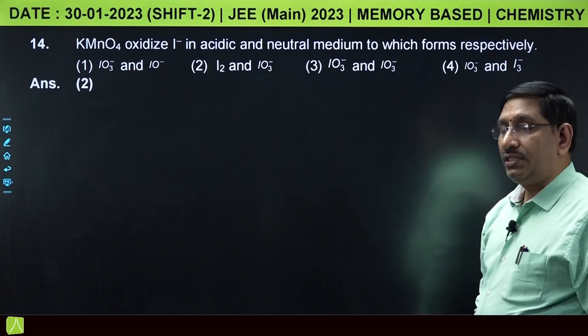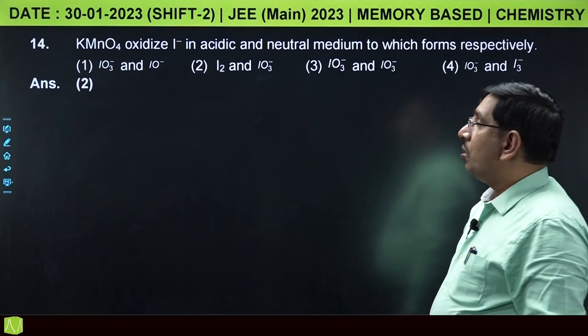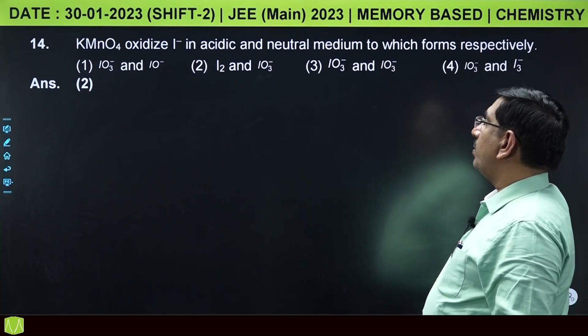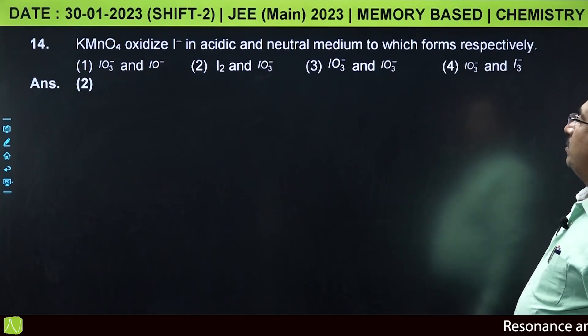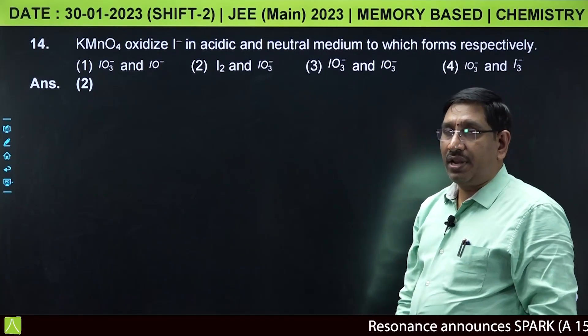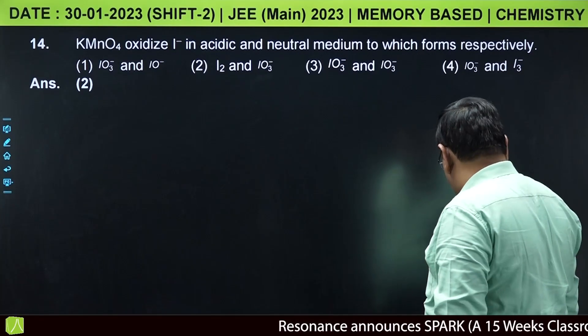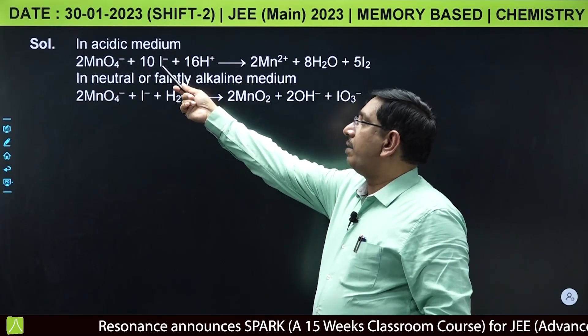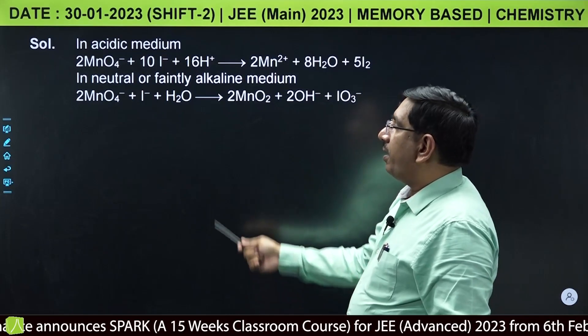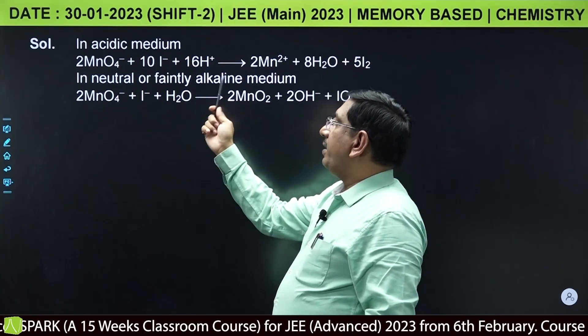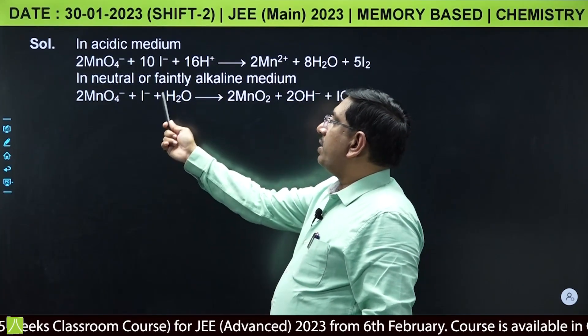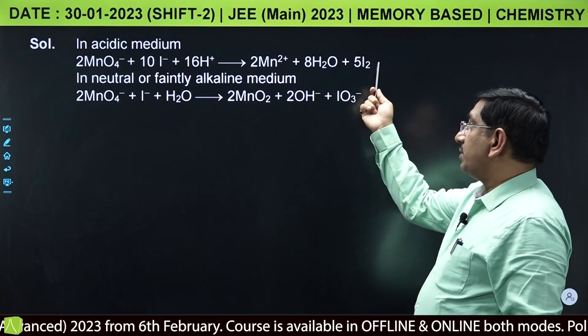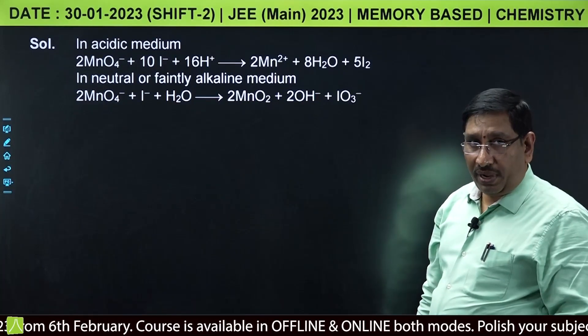This is from d-block elements. Potassium permanganate oxidizes I minus in acidic and neutral medium to which forms respectively? In acidic medium, I minus is oxidized to I2. In neutral or faintly alkaline medium, I minus is oxidized to IO3 minus. The answer is I2 and IO3 minus.